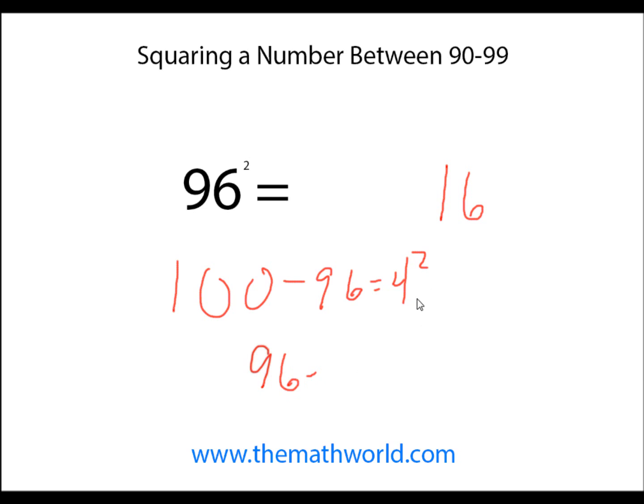Then we have 96 minus the 4 is 92, so we can write down 92. 96 squared is 9,216.